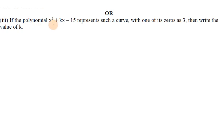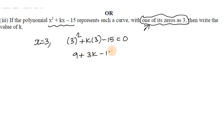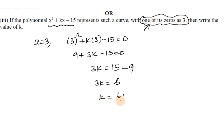If the polynomial x² - kx - 15 has one zero equal to 3, substitute x = 3: 9 + 3k - 15 = 0, so 3k - 6 = 0, giving k = 2. Therefore k equals 2 is the answer.